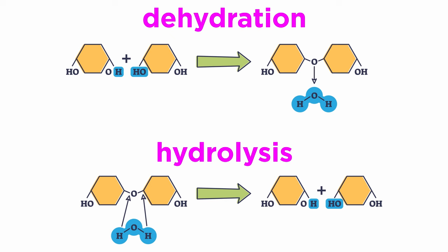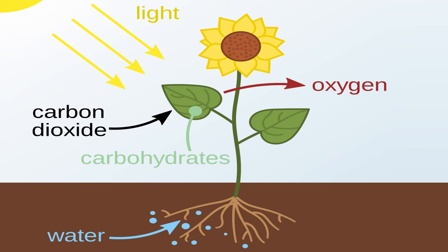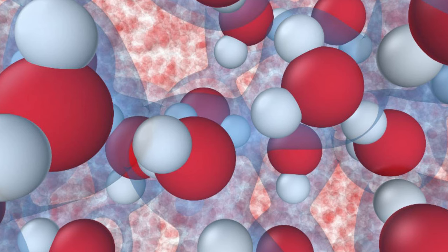Water is directly involved in many chemical reactions to build and break down important components of the cell. Photosynthesis, the process in plants that creates sugars for all life forms and the oxygen we breathe, requires water. It's pretty amazing how a simple molecule is so universally important for organisms with diverse needs.